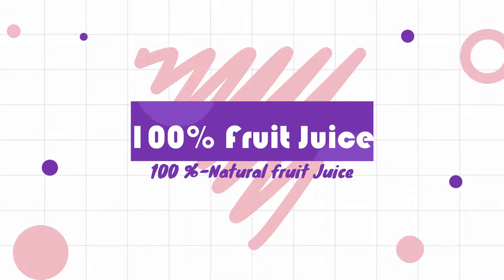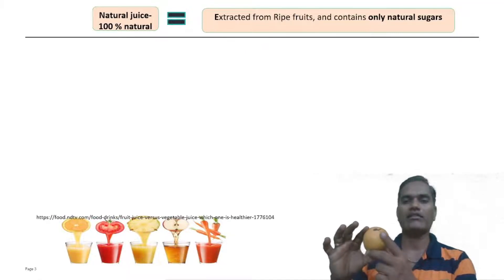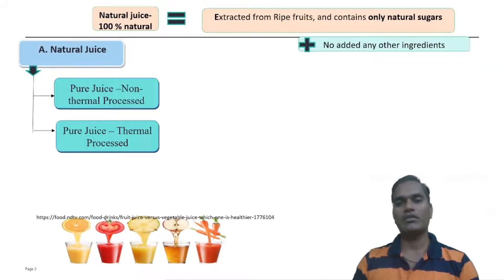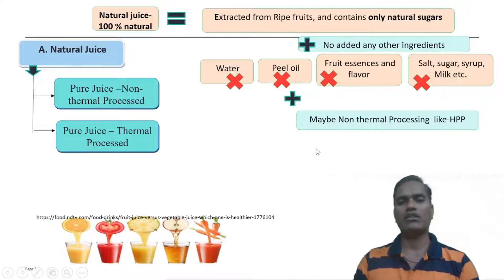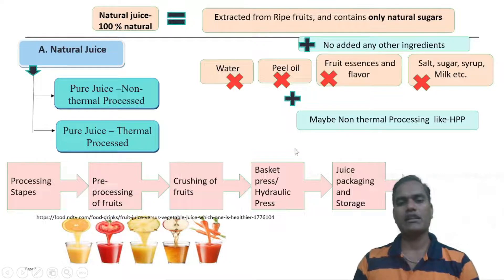What is meant by 100% natural fruit juice? It means whatever fruit pulp or juice is contained in the fruit, it is directly extracted and then directly packed without any addition of ingredients — no addition of water, flavoring substances, salt, sugar, syrup, milk, etc. Only whatever fruit pulp or juice is extracted is directly packed and may be processed. That is the non-thermal processing technology in which the shelf-life of that fruit juice is lower compared to thermal processing fruit juices.